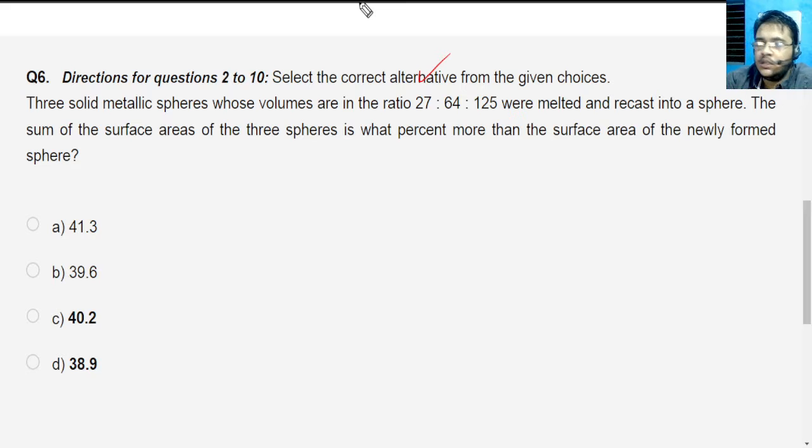Two things - CAT has this habit of asking you mensuration problems, volume problems from areas which are very uncommon. Volume of a cube everybody knows, volume of a sphere everybody knows - 4 by 3 π r³. But total surface area can be confusing because total surface area is uncommon. So CAT has this habit of asking questions like total surface area of a sphere or lateral surface area of a frustum, something of that sort.